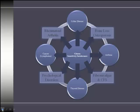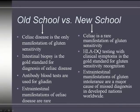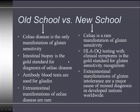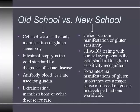Gluten sensitivity is a state of being — it's kind of like having a peanut allergy. If you're allergic to peanuts and you eat them, you get sick; if you're not, you don't. Old school thought is that celiac is the only manifestation of gluten sensitivity. New school thought is that celiac is actually one of the more rare manifestations. Migraine headache and psoriasis are examples, and when all the other ways a person can react to gluten are added, they are actually more common than celiac disease itself.